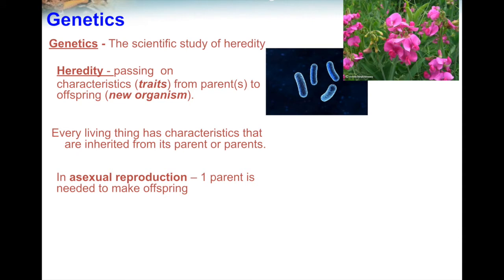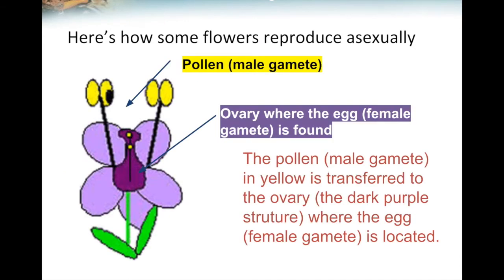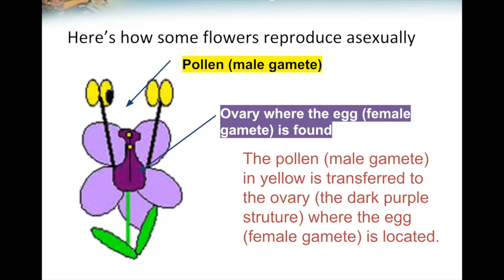Some organisms, like flowers, have both male and female parts and also have male and female gametes or sex cells, so they don't need another flower to help them make more offspring. Here's an animation of how some flowers reproduce asexually. This flower has a male gamete called pollen and a female gamete called the egg. The pollen, which you can see as the yellow circles, is transferred to the ovary, which is the dark purple structure where the egg is located. When the pollen and the egg join, the flower will produce offspring that will have the same exact traits as the parent flower.